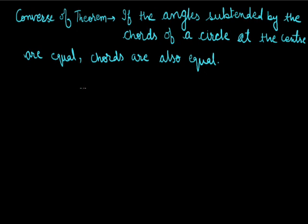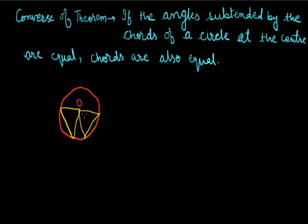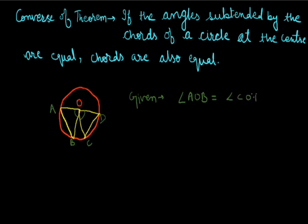Let's say a circle is given with center O, and any two chords of the circle are making the same angle at the center. Let's say the chords are AB and CD, and they are making the same angle at the center, that is angle AOB is equal to angle COD. We have to prove that the length of the chords, that is AB, is equal to CD.